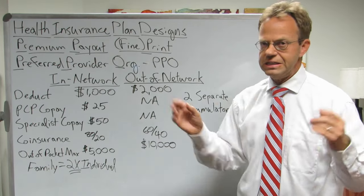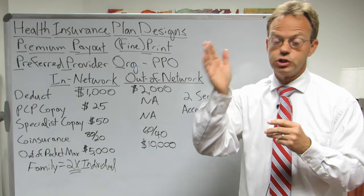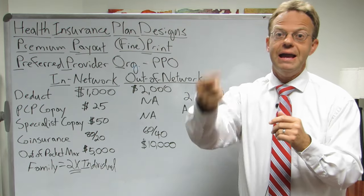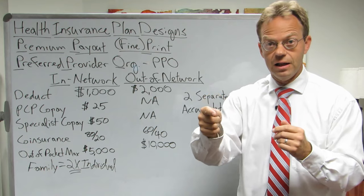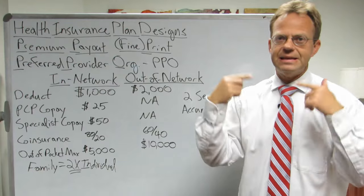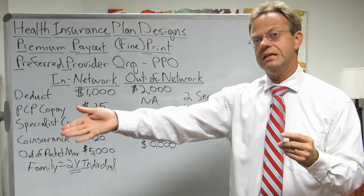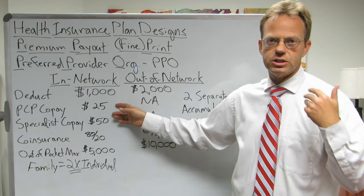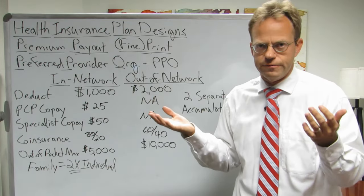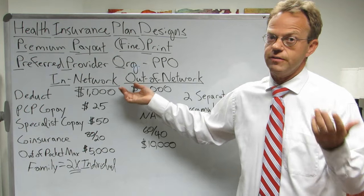The $25 and $50 co-pays are not what the visit actually costs. The provider will bill the insurance for $250, the insurance applies roughly a 50% discount, and actually pays the doctor $125. The co-pay you pay is not the actual price of the visit — the insurance is essentially subsidizing the doctor visits so that it only costs you $25 instead of $125.